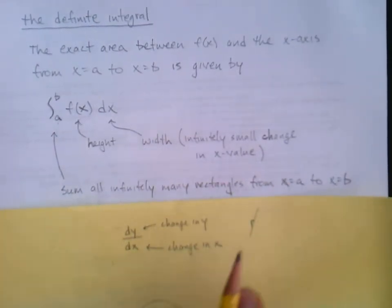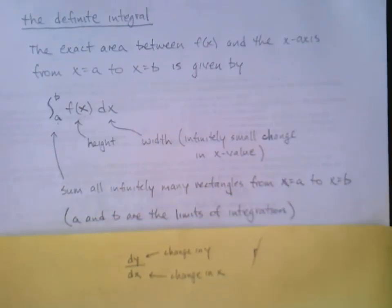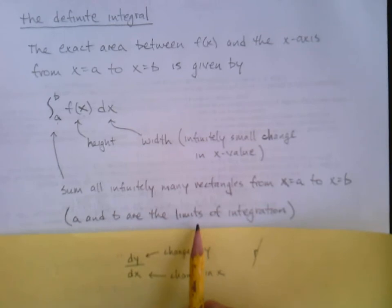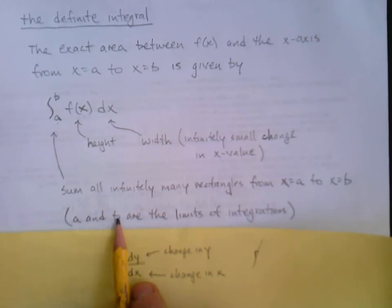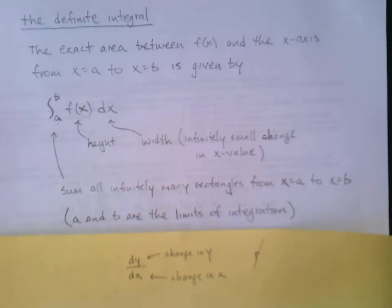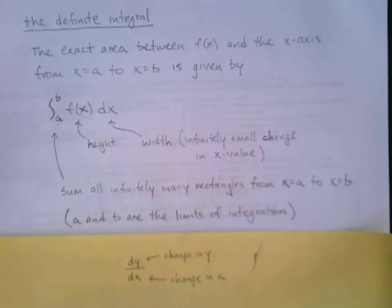On that note, a and b—you'll typically hear them referred to as the limits of integration. The limits because they are where you begin and end, so they're like the boundaries. That's what we mean by limits here. Begin your rectangles at a, stop them at b, pack infinitely many in there, and add them all up—all the areas.